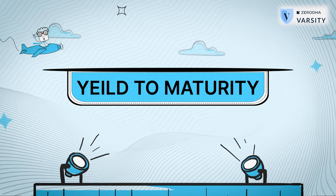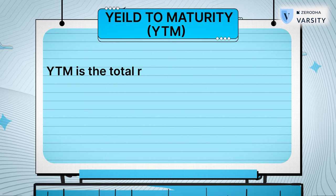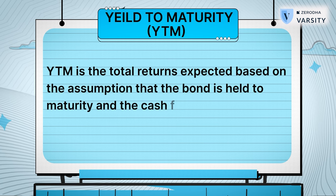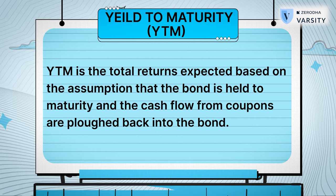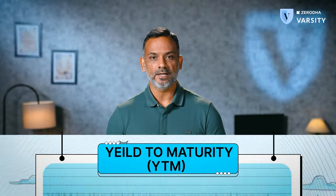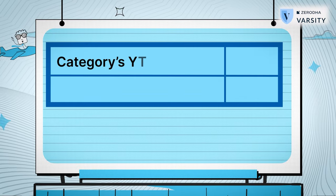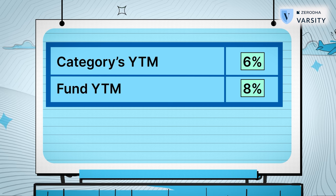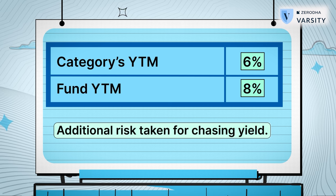Next, we need to look at another metric called the yield to maturity, or YTM. YTM is the total returns expected based on the assumption that the bond is held to maturity and the cash flows from the coupons are reinvested. A debt fund is basically a collection of bonds, so the YTM you see for a debt fund is at an aggregate level. Intuitively, higher the YTM the better — but you can also look at YTM as an indicator of how much risk the fund manager is taking. For example, if the category average YTM is 6% whereas this particular fund's YTM is 8%, it implies the fund manager is taking additional risk to chase returns.